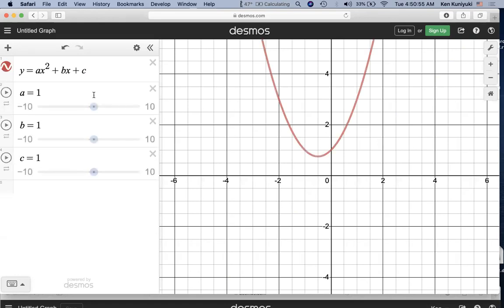Now, if we vary a, we're varying the shape of the parabola. Notice that as a stays positive and increases, it gets steeper and steeper.